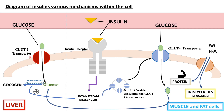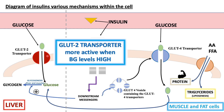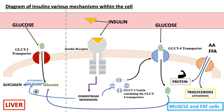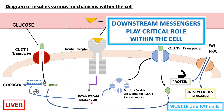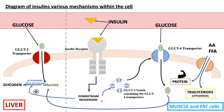On the liver, there's the GLUT2 transporter — remember, this is an insulin-independent transporter. It doesn't rely on insulin for its mode of action; it's active when our blood glucose levels are high, such as after we eat. When blood glucose levels are high, glucose will enter into the cell and either be used as energy or put into storage. The point is that these downstream messengers play a critical role in many of these processes. If anything impedes or impairs these downstream messengers, multiple mechanisms are impacted: protein synthesis, lipogenesis, glycogenesis, as well as glucose transport into the cell.